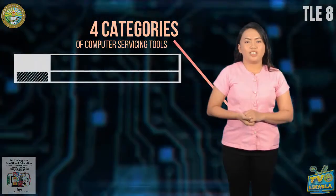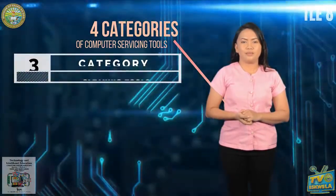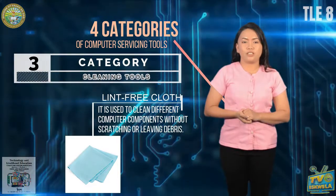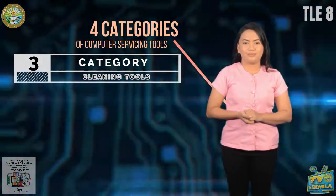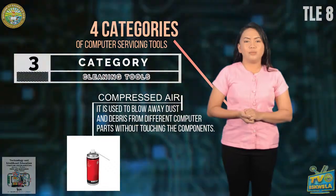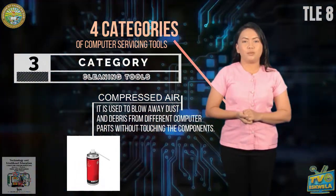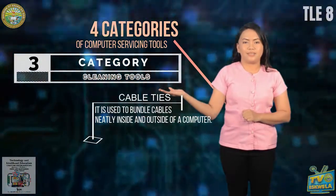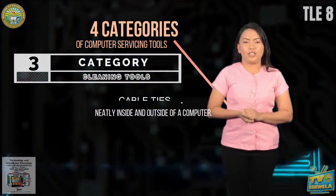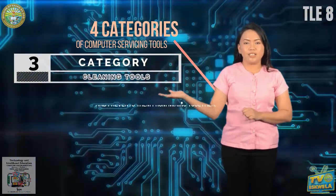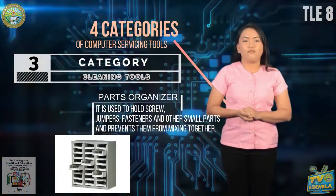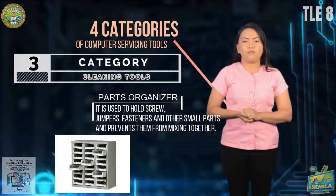The third category is cleaning tools. Examples are: Lint-free cloth — used to clean different computer components without scratching or leaving debris. Compressed air — used to blow away dust and debris from different computer parts without touching the components. Cable ties — used to bundle cables neatly inside and outside of a computer. Parts organizer — used to hold screws, jumpers, fasteners, and other small parts and prevent them from mixing together.